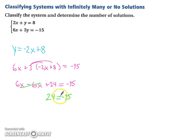Negative 6 and 6 make nothing. So we have 24 equals negative 15. Last time I checked, 24 does not equal negative 15. So therefore, no solution.